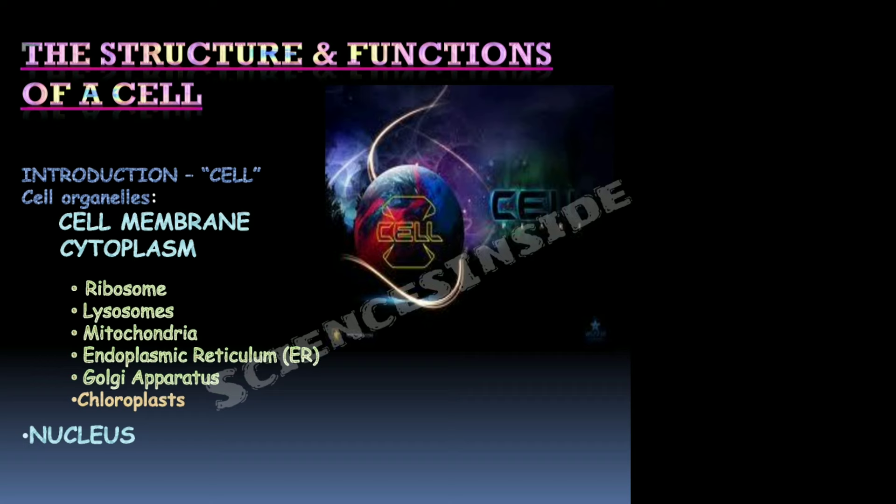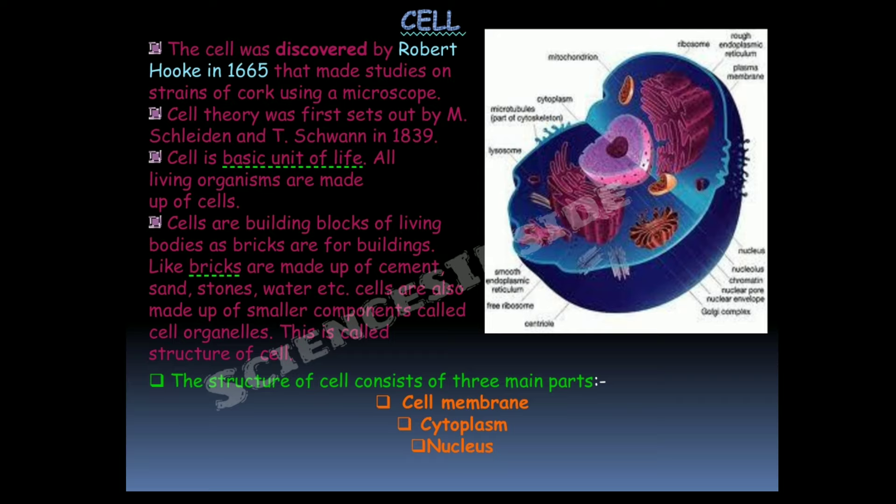The cell was discovered by Robert Hooke in 1665, who made studies on strains of cork using a microscope. Cell theory was first set out by Schleiden and Schwann in 1839. Cells are the basic unit of life and all living organisms are made up of cells.